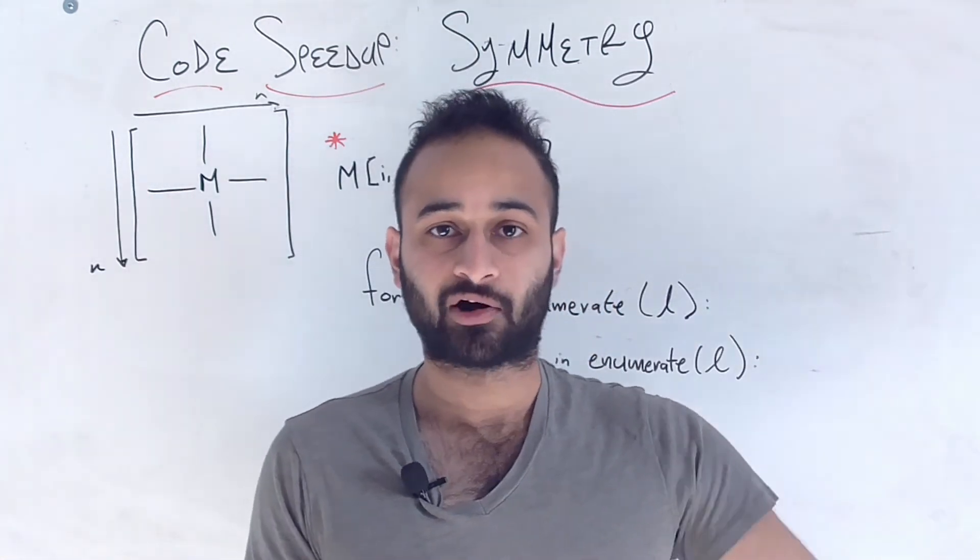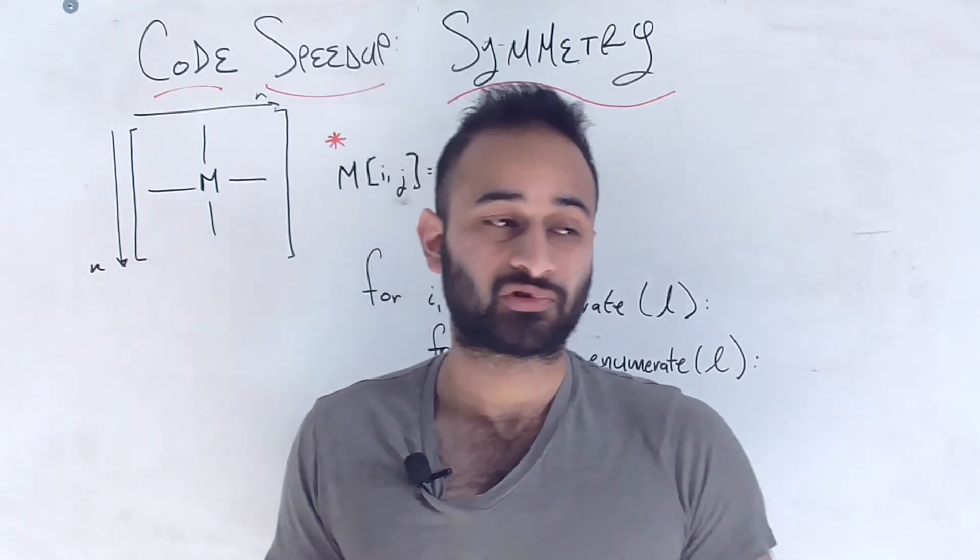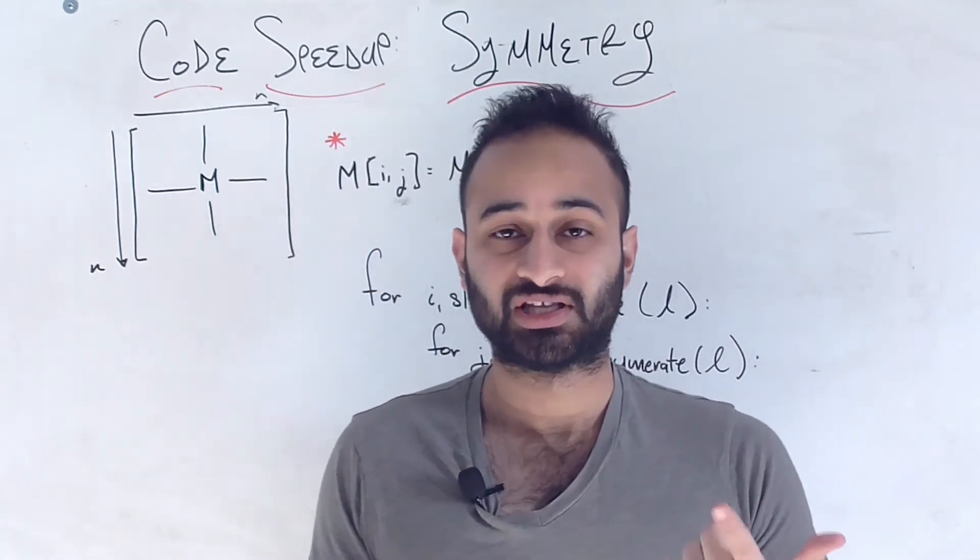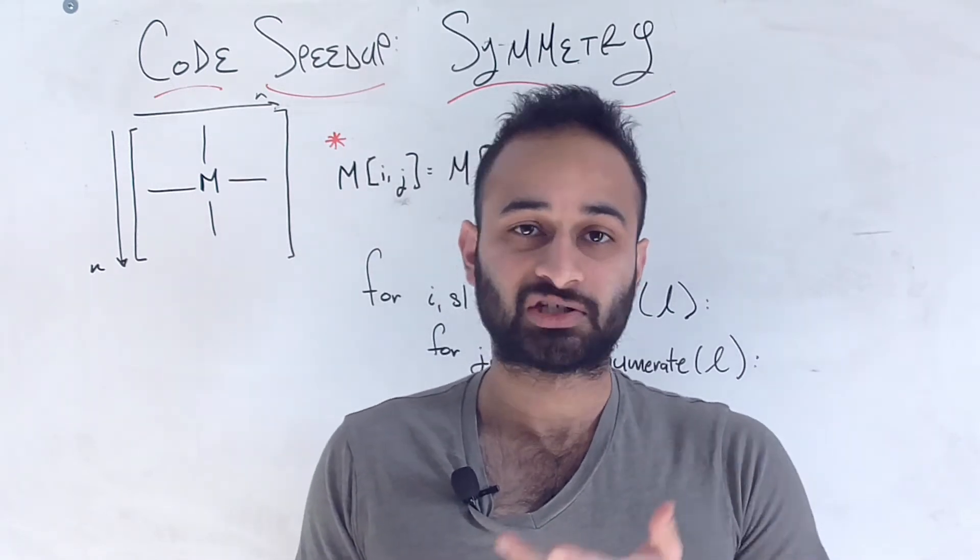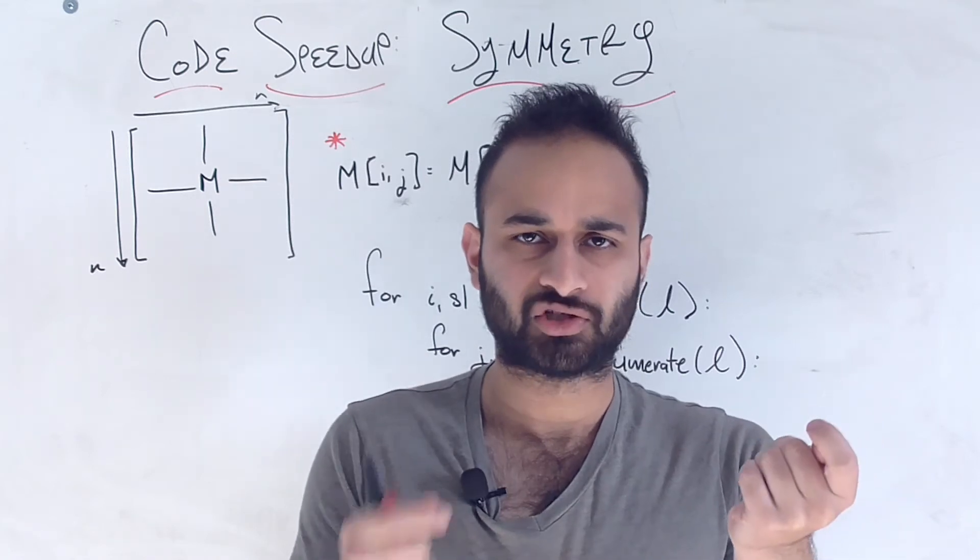As we'll see in the code, the things we care about are going to be students at a university. And each student has some information about them, such as the GPA, how many units they've taken, what year they're in. And based on these pieces of information, we can say, what's the similarity between student i and student j?